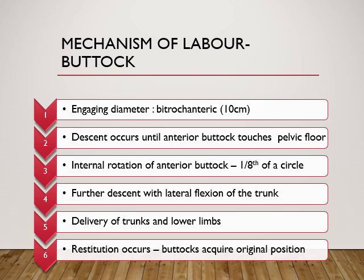The engaging diameter for the buttocks is the bitrochanteric diameter, which is 10 centimeters. Descent occurs until the anterior buttock touches the pelvic floor, followed by internal rotation of the anterior buttock through one-eighth of a circle. There is further descent with lateral flexion of the trunk, followed by delivery of the trunk and the lower limbs. This is followed by restitution so that the buttocks reacquire the original position.